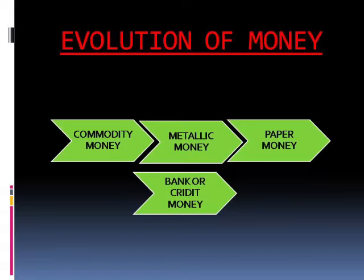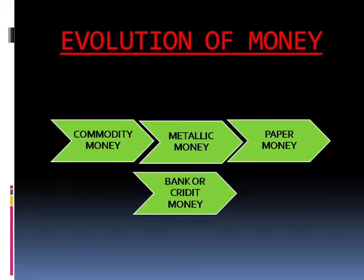Due to the limitations of barter, the exchange process was highly inefficient. It was to overcome these difficulties that money was invented by society, driven by increasing scale of industrialization and commercialization. Money has evolved through different stages: commodity money, metallic money, paper money, and bank or credit money.